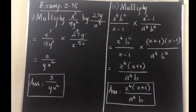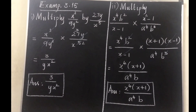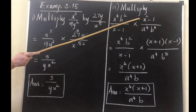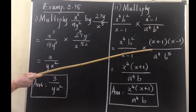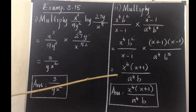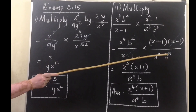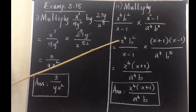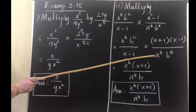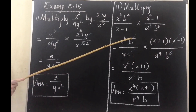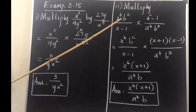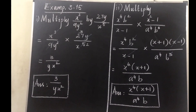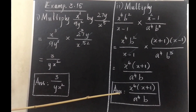Second problem: multiply x⁴b²/((x−1)) by (x²−1)/(a⁴b³). The term x²−1 is a quadratic polynomial, so factorize it as (x+1)(x−1). After that, cancel common terms: b² and b³ cancel leaving b, and (x−1) and (x−1) cancel. The remaining terms in the numerator are x⁴ and (x+1), divided by a⁴b. So factorize into linear factors, cancel the matching numerator and denominator terms, and multiply the remaining ones.